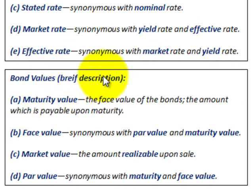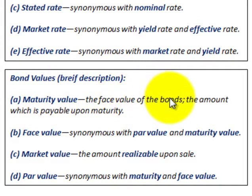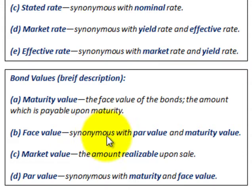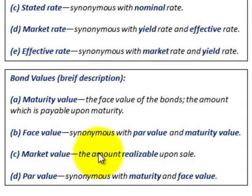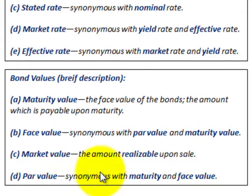Now let's look at bond values. The maturity value is the face value of the bond — the amount which is payable upon maturity. The face value is synonymous with the par value and also the maturity value. The market value is the amount realizable upon the sale of the bond. The par value is synonymous with the maturity value or face value of the bond.